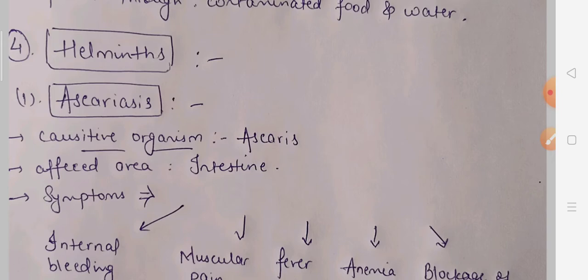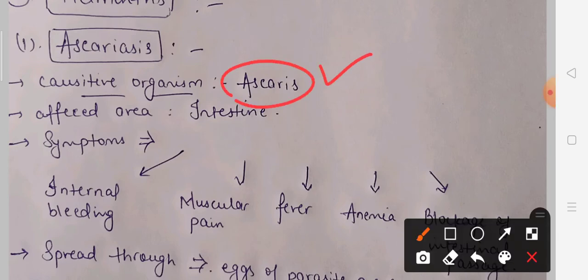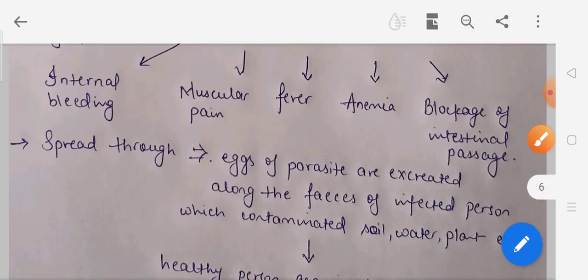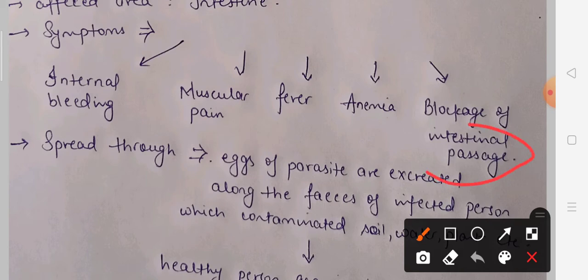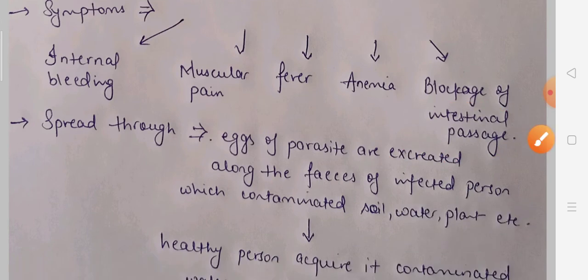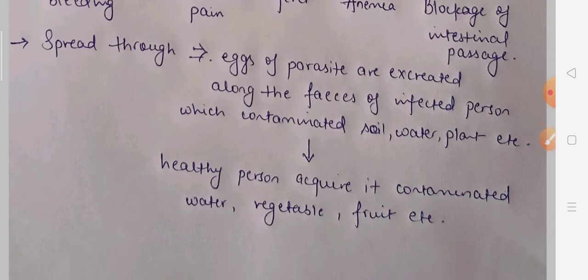Now we study helminthic diseases — diseases caused by worms. There are two diseases here: the first is ascariasis and the second is elephantiasis, also called filariasis. For ascariasis, the causative organism is Ascaris. The affected area is our intestine. Symptoms include internal bleeding, muscular pain, fever, anemia, and the intestinal passage gets blocked. The disease spreads when eggs of the parasite are excreted with the fecal matter of an infected person, contaminating soil, water, or plants, and then reach us through contaminated food, vegetables, or water.